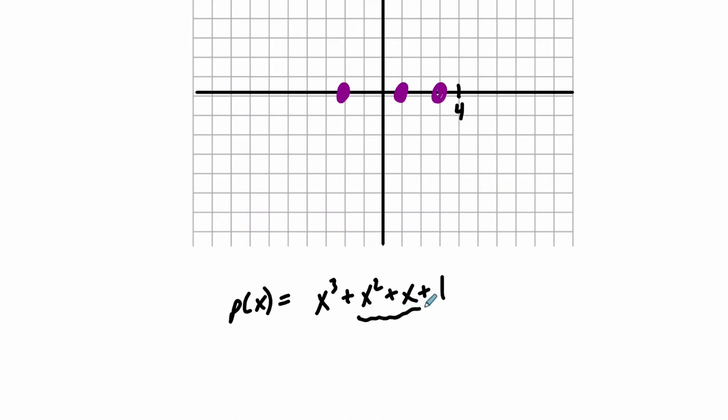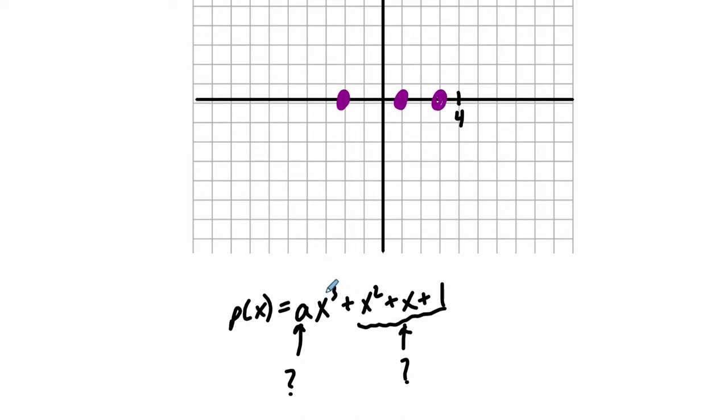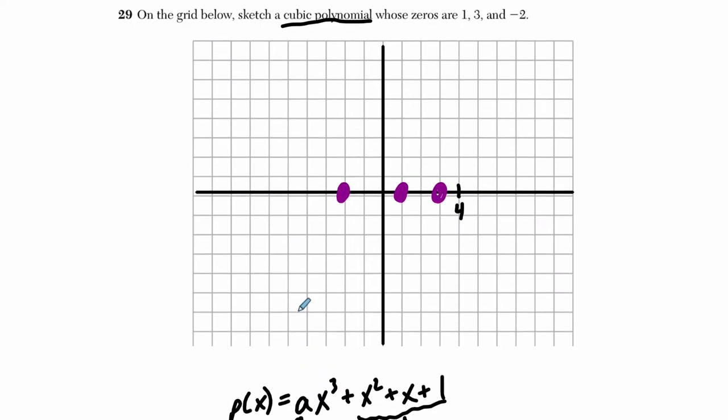This is me just guessing. We don't really know. And we also don't know the value of the coefficient of the leading term. But the idea is that if there is an odd degree, and a, the coefficient of that is positive, it would look something like this.